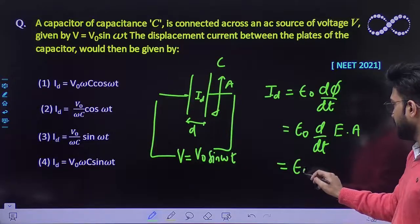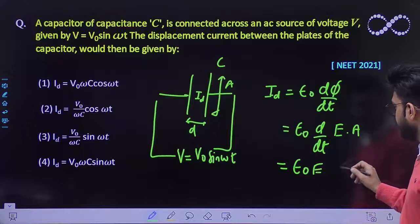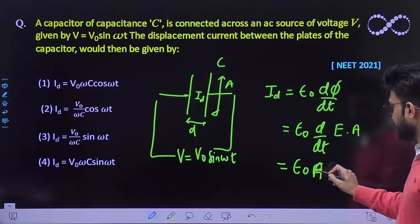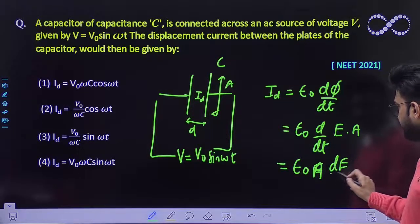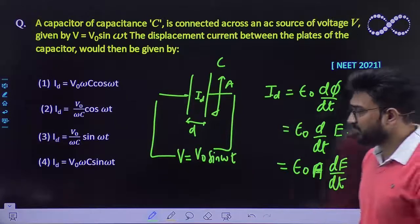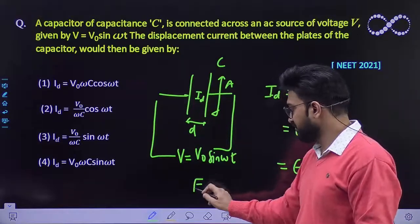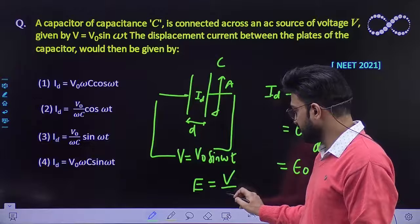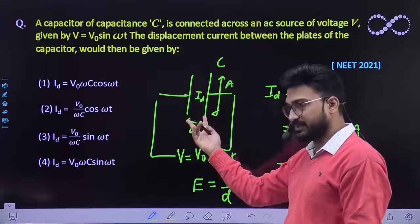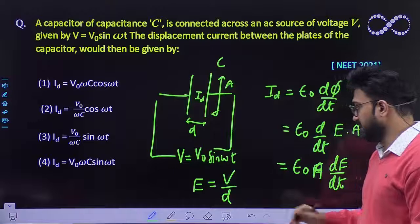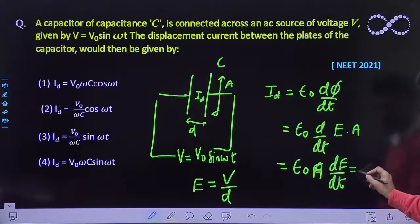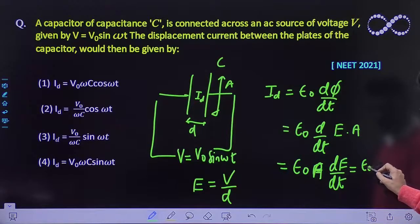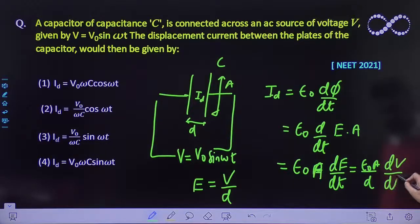So it would be ε0 A dE/dt. Also we know that this electric field is given by relationship potential and D is a separation between them, so E must be equal to V/D. So putting the value of all these things, you will be getting ε0 A/D, which is nothing but dV/dt.